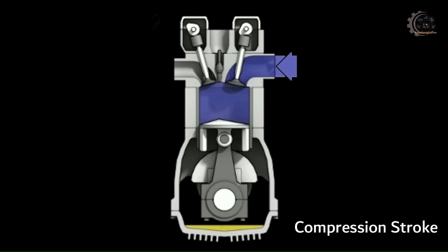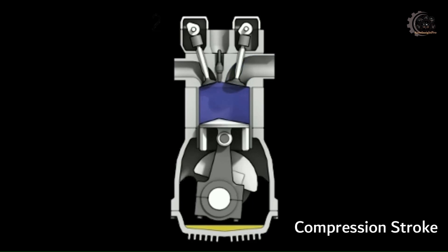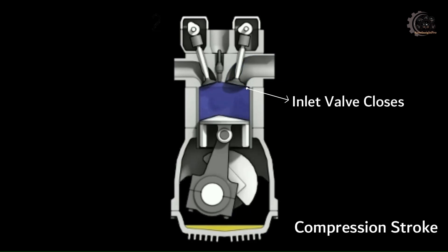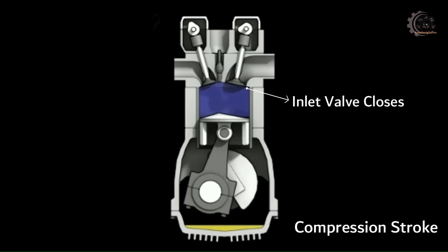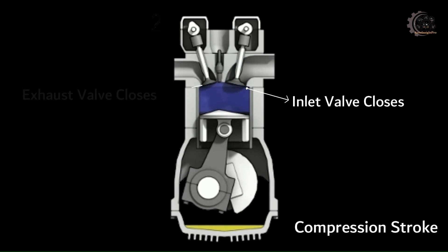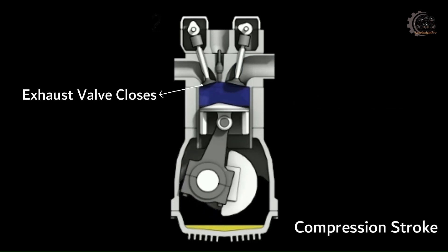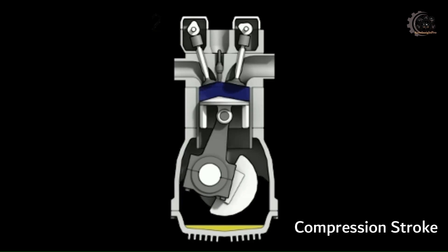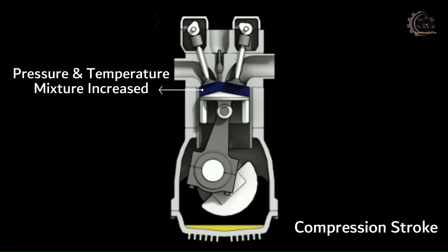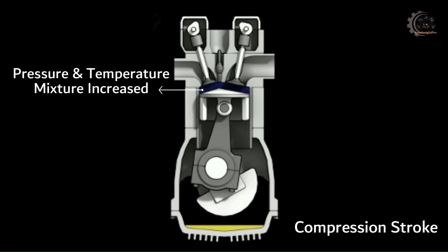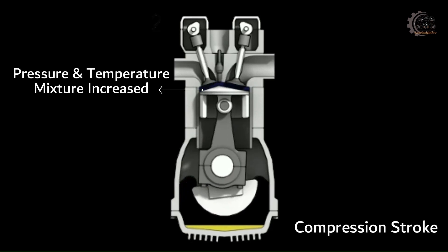Compression stroke: The piston moves up after the intake stroke. The inlet valve closes as the piston moves upward, and the exhaust valve also remains closed. The piston compresses the fuel-air mixture by pushing it upward into the clearance space at the top of the cylinder. The pressure and temperature of the mixture increase during compression.